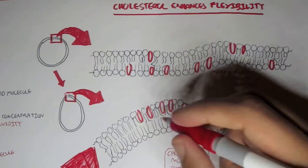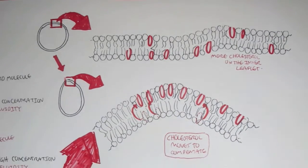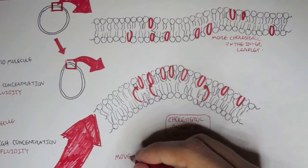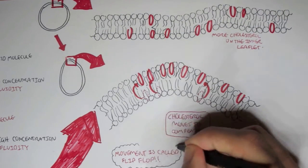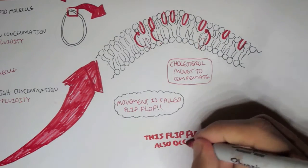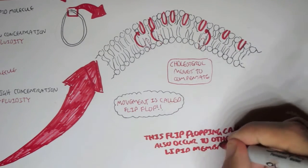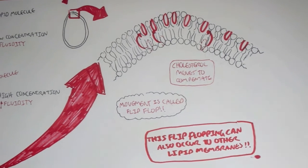So what happens here, we have cholesterol previously here, it moves. This movement mechanism by cholesterol is called the flip-flop movement. This flip-flopping can also occur to other lipid molecules. So other lipid membranes, types of membranes, can also do this.